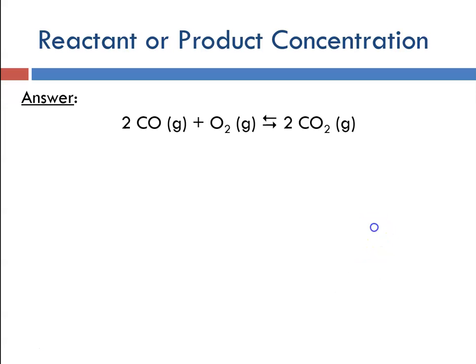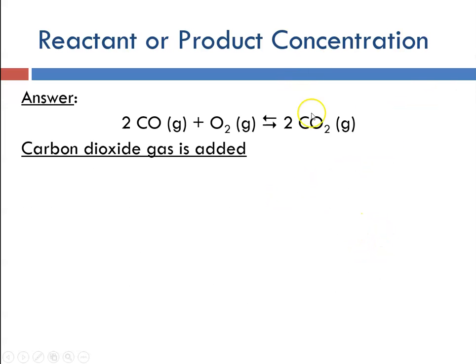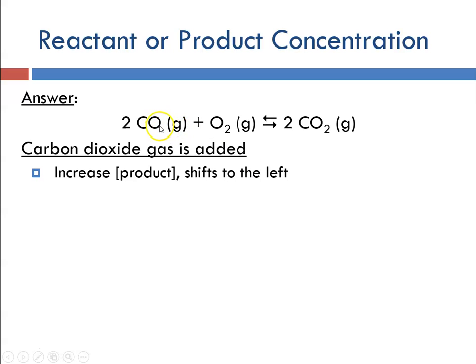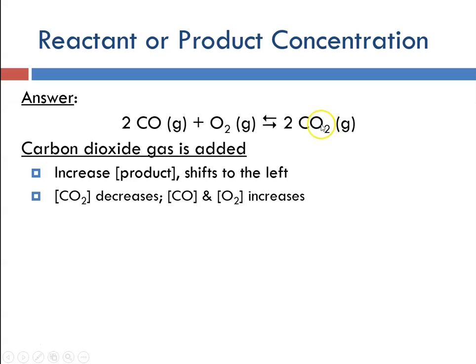Here's our reaction again. If carbon dioxide gas is added — that is a product — the increase in product will result in a shift to the left to reduce that. That means the concentration of carbon dioxide would decrease and the carbon monoxide and oxygen would increase.